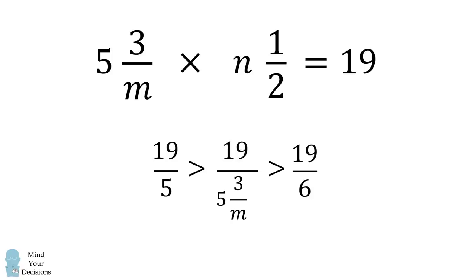The upper bound is 19 over 5, which is equal to 3.8. The lower bound is 19 over 6, which is equal to 3 and 1 sixth. This means 19 divided by 5 and 3 over m must be something that has a whole number part that's equal to 3. This means that n is equal to 3, so we've immediately solved for the value of n.